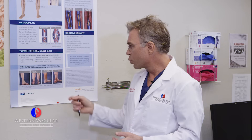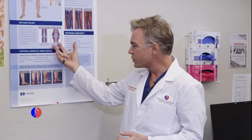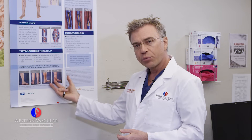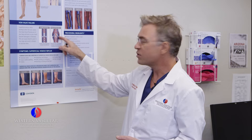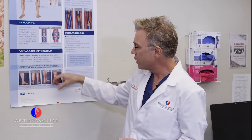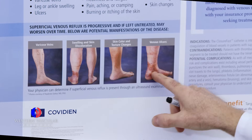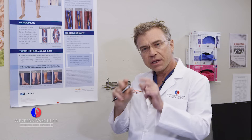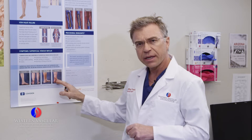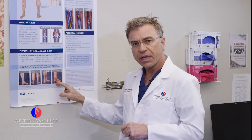Sometimes you can get what we call venous ulcerations or wounds around the ankles. This occurs when there is so much gravitational force and pressure on the leg veins that blood pools all the way down to the ankle, causing erosions of the veins through the skin and leading to a wound. These wounds can take quite a long time to heal.